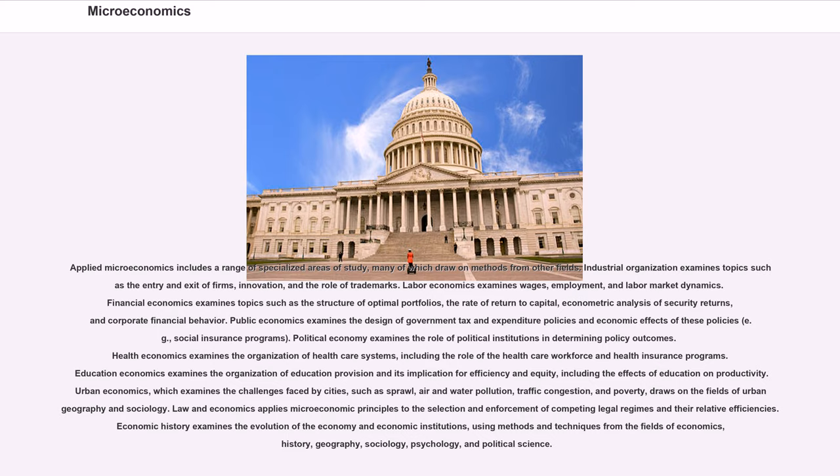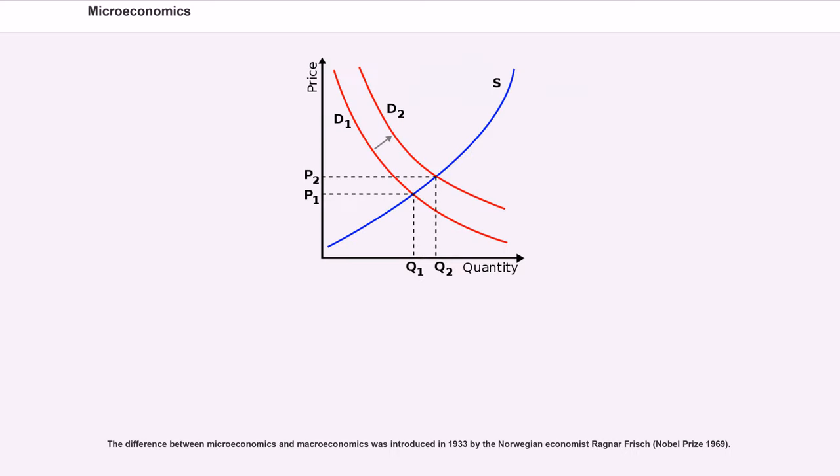The difference between microeconomics and macroeconomics was introduced in 1933 by the Norwegian economist Ragnar Frisch, Nobel Prize 1969.